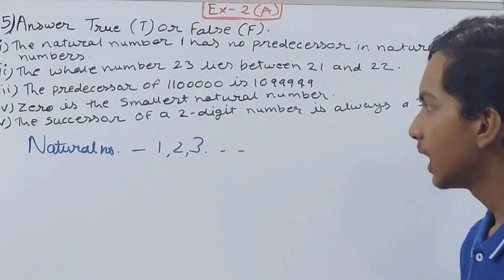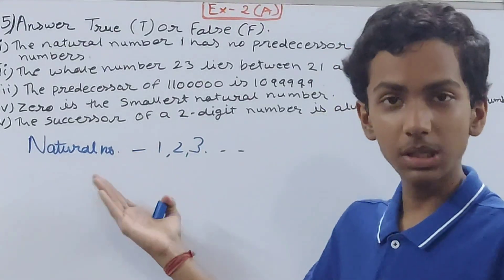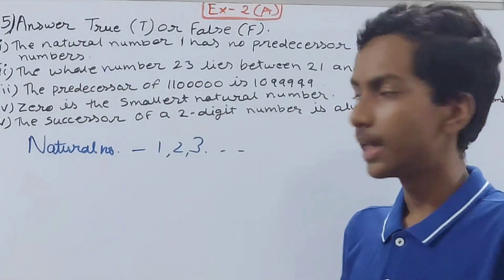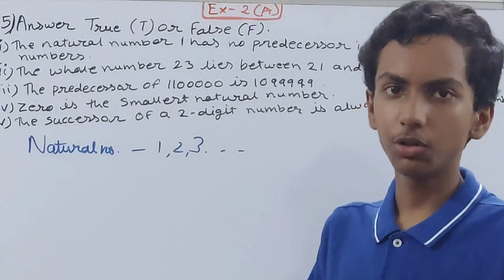So the natural number 1 has no predecessor in natural numbers. See, predecessor means minus 1. So do you see any number behind 1? No.